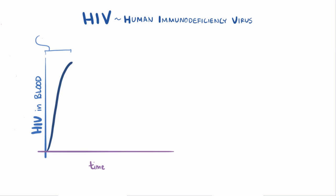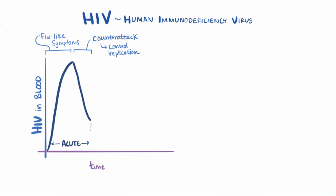Patients typically experience flu-like or mononucleosis-like symptoms during the acute infection. In response, the immune system mounts a counterattack and starts to control the amount of virus replication. The amount of virus in the blood declines to lower but still detectable levels by 12 weeks, at which point the patient enters into the chronic or clinically latent phase, which can last between 2 and 10 years.